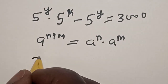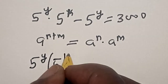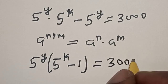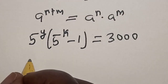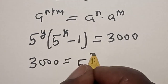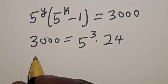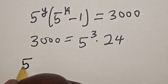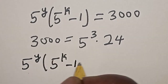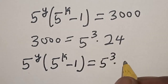Let's bring it out. We have 5 raised to power y into 5 raised to power k minus 1, is equal to 3,000. Then, 3,000 can also be expressed as 5 raised to power 3 multiplied by 24. So we want to manipulate this: 5 raised to power y into 5 raised to power k minus 1 is equal to 5 cubed multiplied by 24.